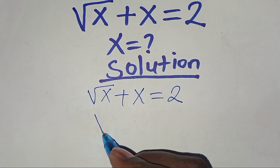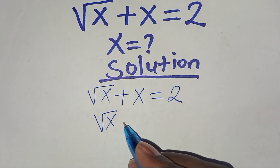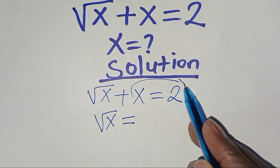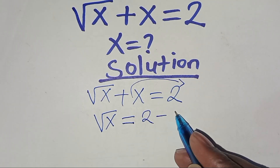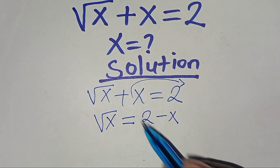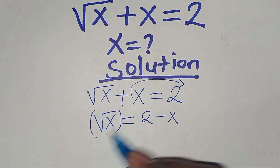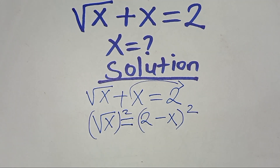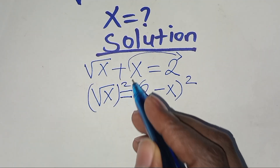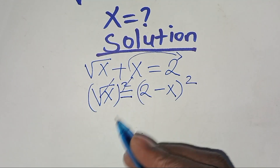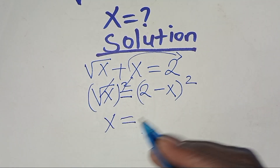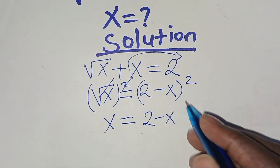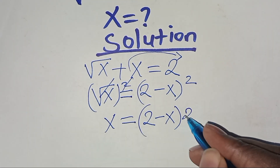The first thing to do is make square root of x the subject of the formula. So we have square root of x; we take x to the right hand side and subtract it. The next step is to square both sides, so that we can eliminate the square root.